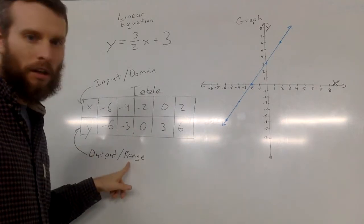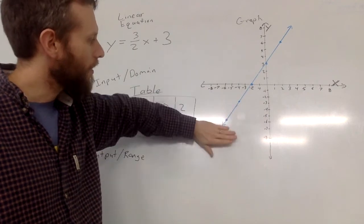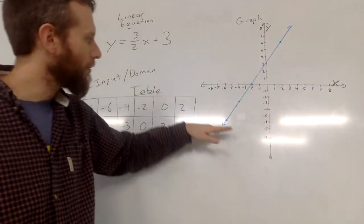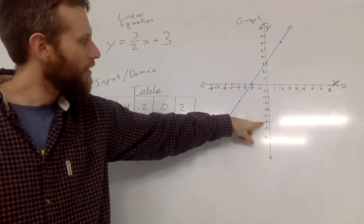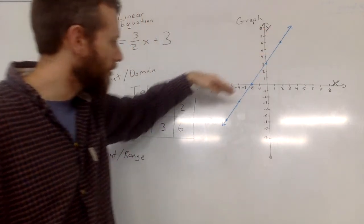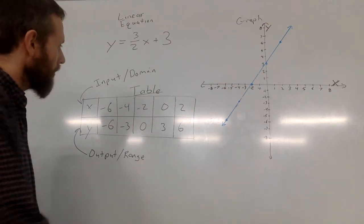And then your range would be all of your y values. So if I was, again, if this line stopped here, and if it stopped at this point here, then all my y values would be between negative 6 and then positive 6, if you're using these two points. And you'll see more of that as you go into algebra 1 and on.